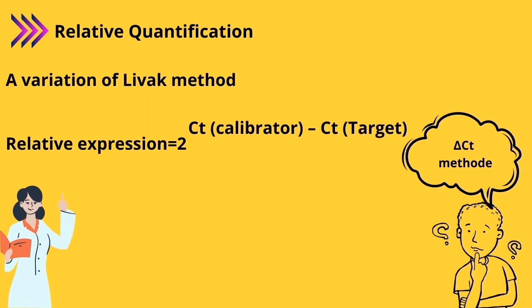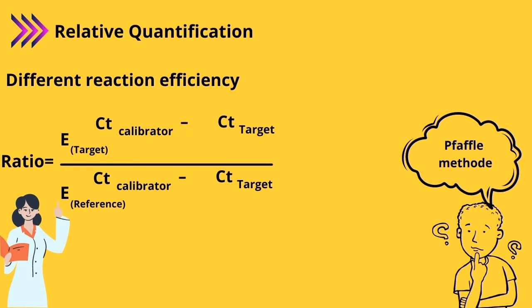Delta CT method is almost like LiveΔΔCt method, and this is the appropriate equation for this method. Now what about Pfaffl method? When can we use it? If your target and reference gene have different efficiency, you can use this method. Now let's work on an example together to learn more about LiveΔΔCt or delta delta CT method.